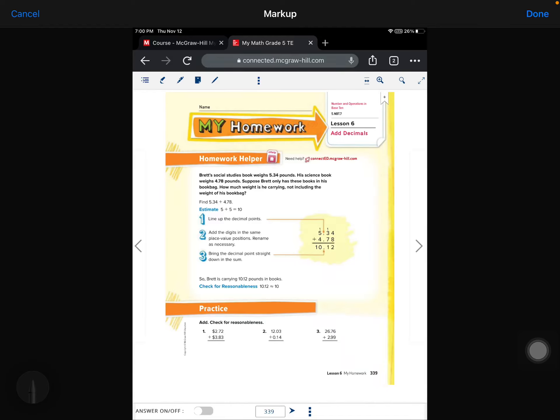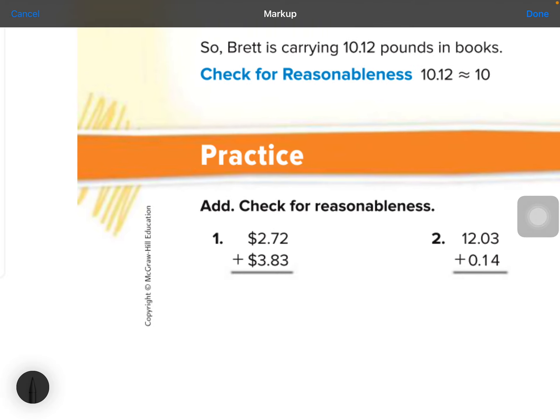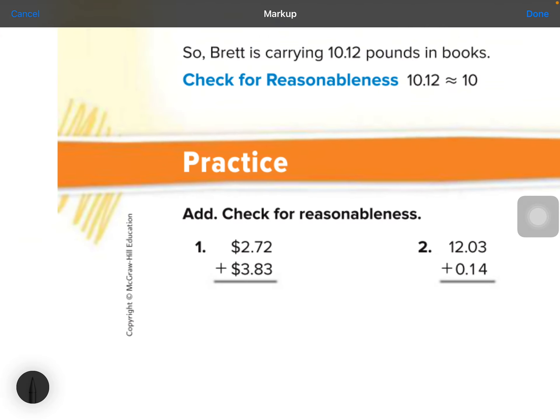We're on Chapter 5, Lesson 6, page 339, the homework. The biggest thing you need to remember with adding decimals is you line up those decimal points. If you don't, the entire problem will be wrong. So let's bounce on over here.